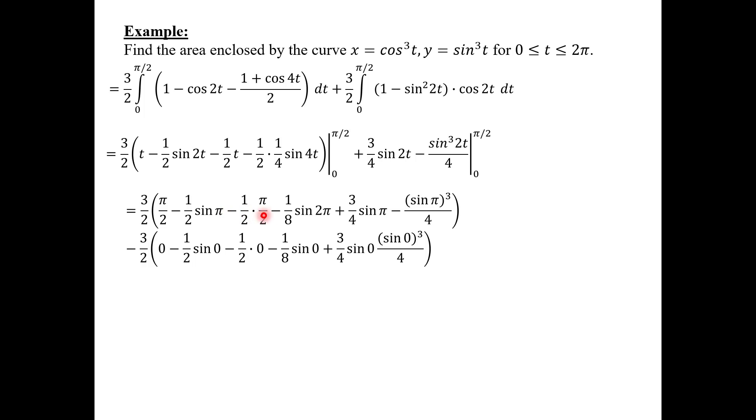Plugging in pi over 2 into all of our terms, and then minus having plugged in 0 into all of our terms. This whole second quantity, all of this becomes 0. And up here, a lot of terms go to 0 as well. We keep the pi over 2, sine of pi is 0. We're going to keep this minus pi over 4, sine of 2 pi is 0, sine of pi is 0, and sine of pi over here is also 0. We end up with three-halves times pi over 2 minus pi over 4 for a final answer of 3 pi over 8.